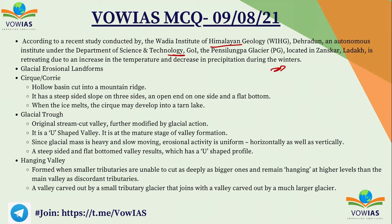If you see different glacial landforms: the Cirque is a hollow basin cut into a mountain ridge with steep-sided slopes on three sides and an open end on the flat bottom. When ice melts, the Cirque may develop and turn into a lake. The glacial trough is the original stream-cut valley further modified by glacial action — it is a U-shaped valley representing a mature stage of valley formation.